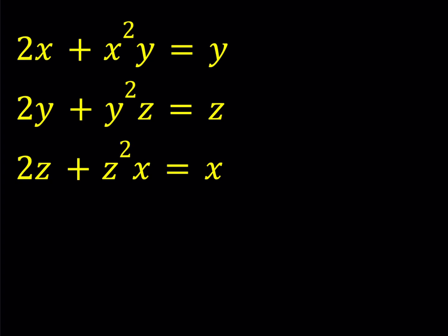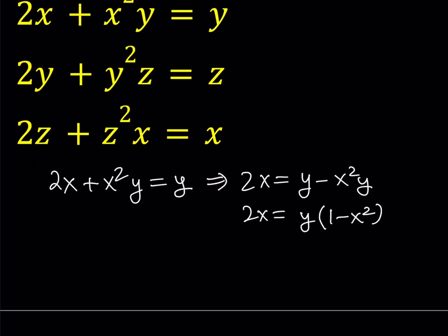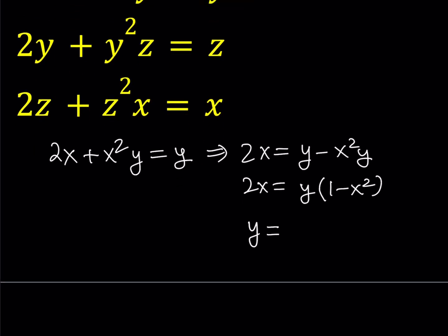This system can be simplified by solving each variable in each equation. For example, consider the first one: 2x plus x² y equals y. We can solve this equation for y. Since x is quadratic and y is linear, it makes more sense to isolate y. Subtracting x² y and factoring out y gives y times (1 minus x²), and dividing both sides by (1 minus x²) gives y equals 2x over (1 minus x²).